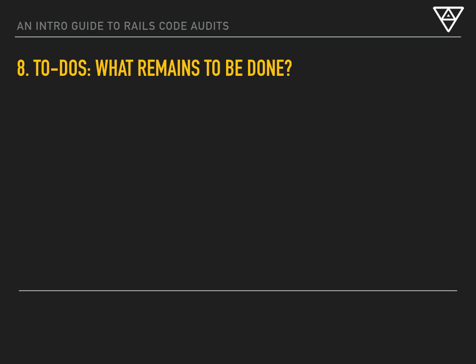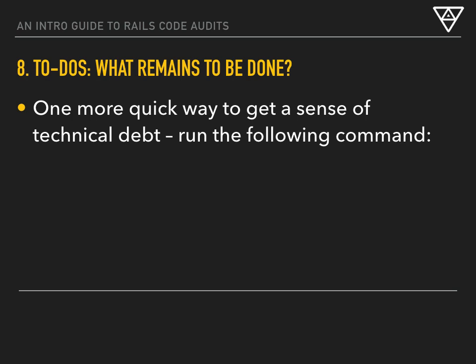The last step we take before we dive into a much deeper code audit is to find out what the previous developers have indicated needed to be taken care of. A really common thing developers do is leave themselves and future developers a little to-do note. We find these scattered across most projects. We'll run a quick command to grep the whole app directory looking for the word 'TODO.' We usually see a little list, which gives us a better sense of some smelly areas of the code base or confusing things that could potentially be removed. Developers are really good at writing 'this should probably be removed' and then not removing it. So let's find those things, document them, and look into them further.